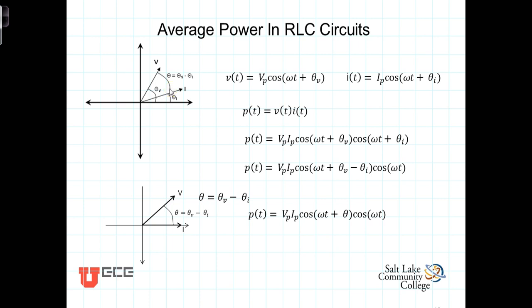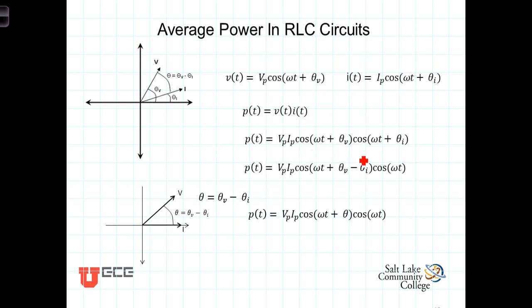In general, we're going to have a voltage V that has some phase theta sub V, and we'll have a current which will have its own phase term, theta sub I. The instantaneous power is going to be just the product of those two.